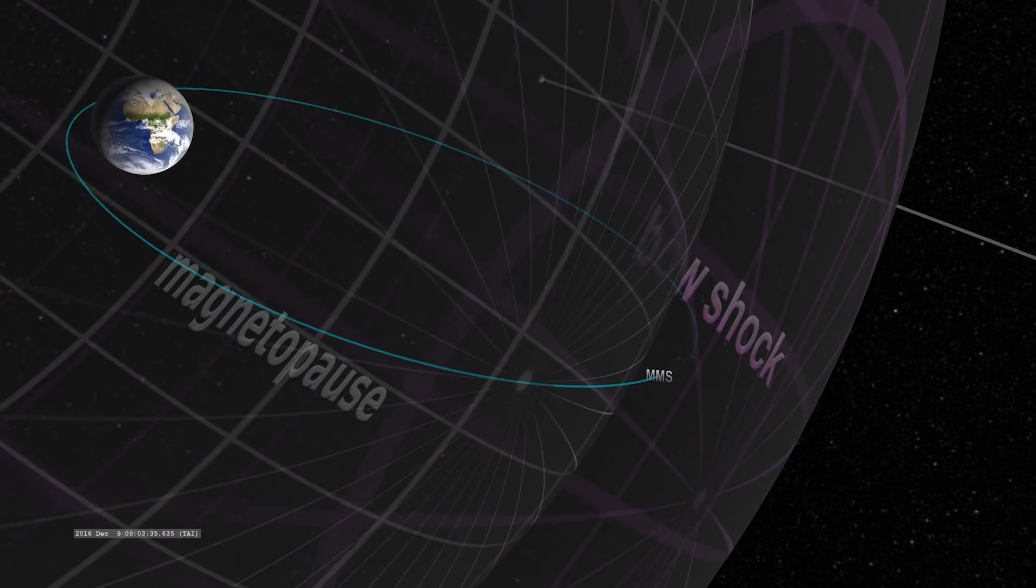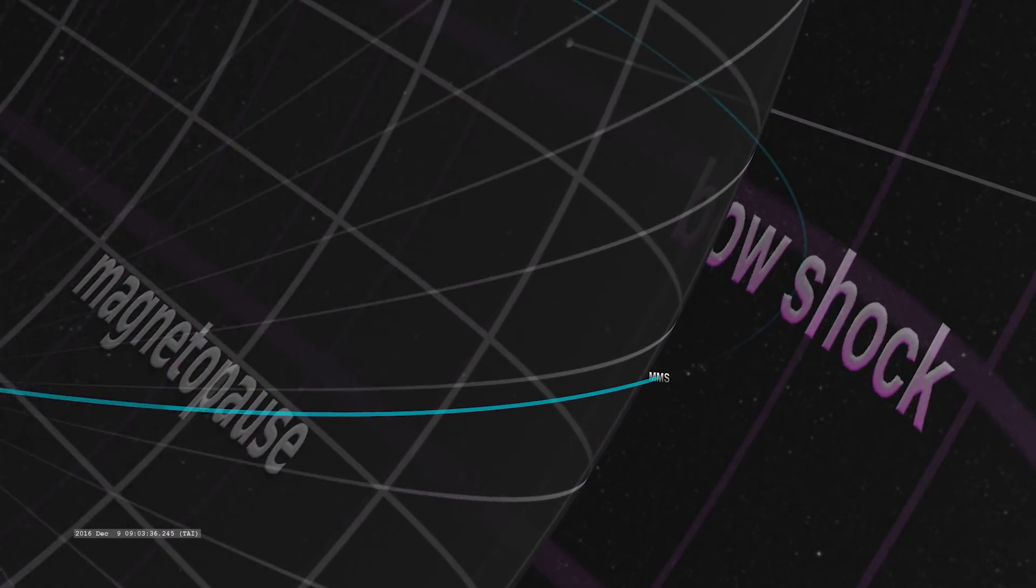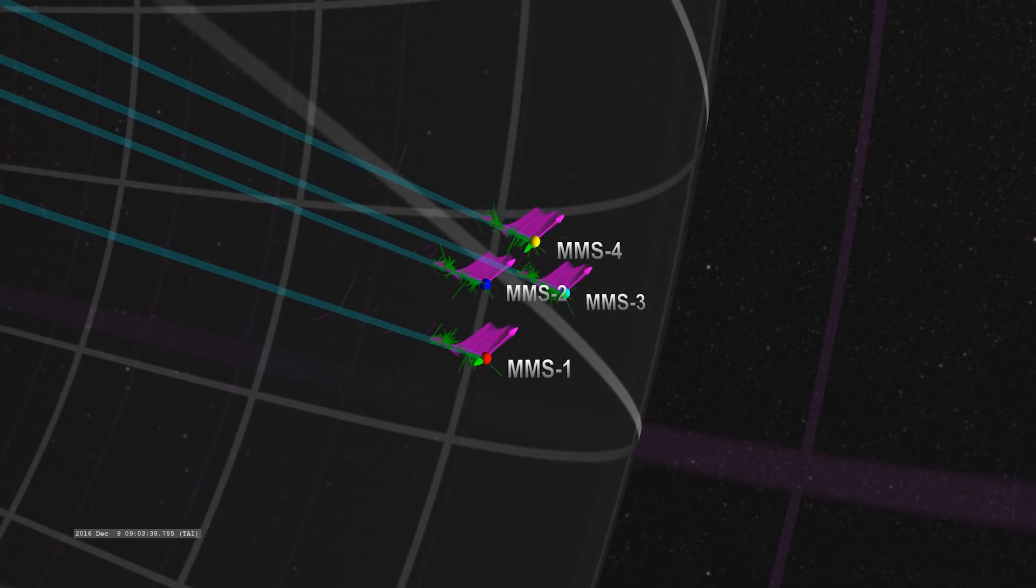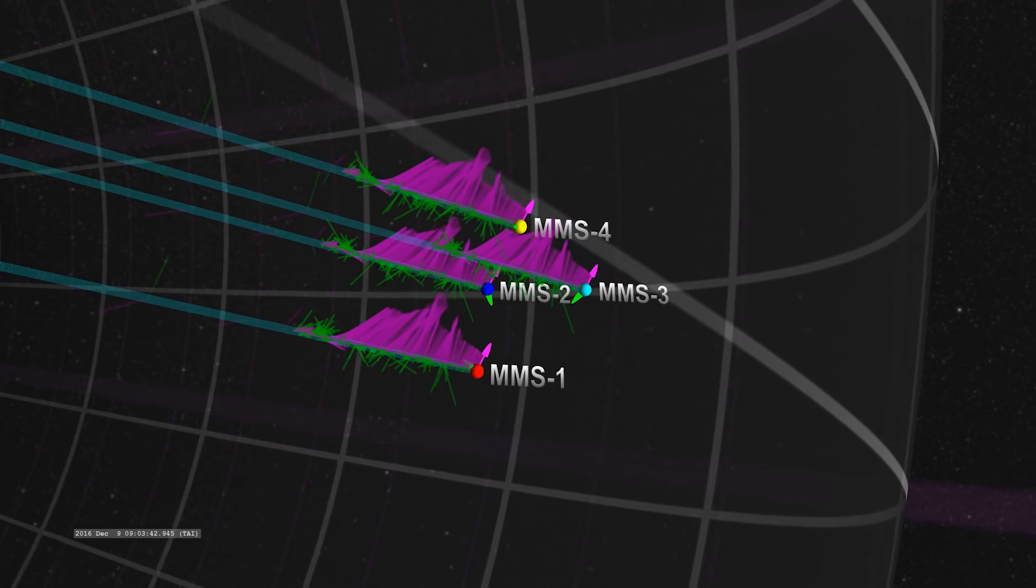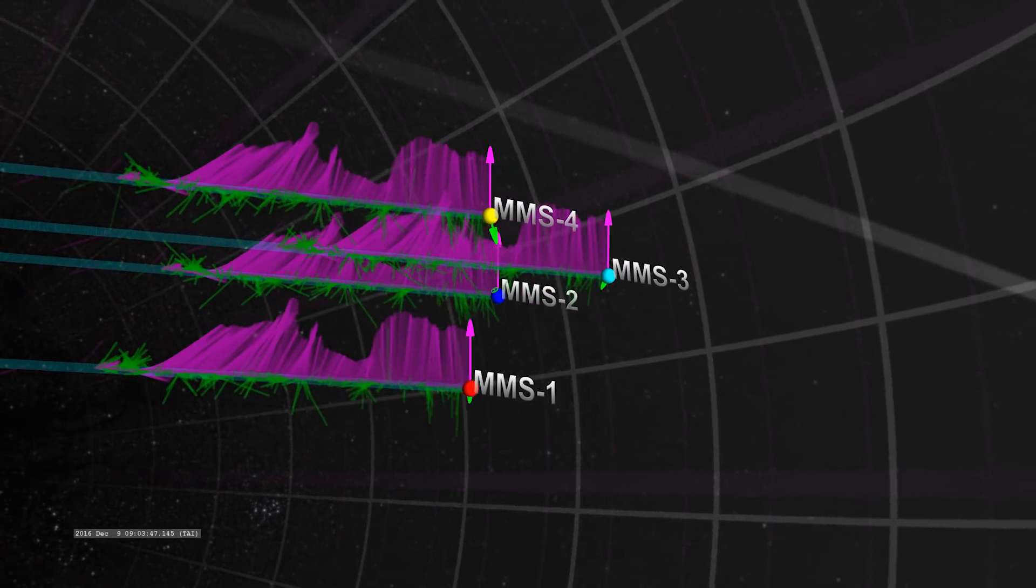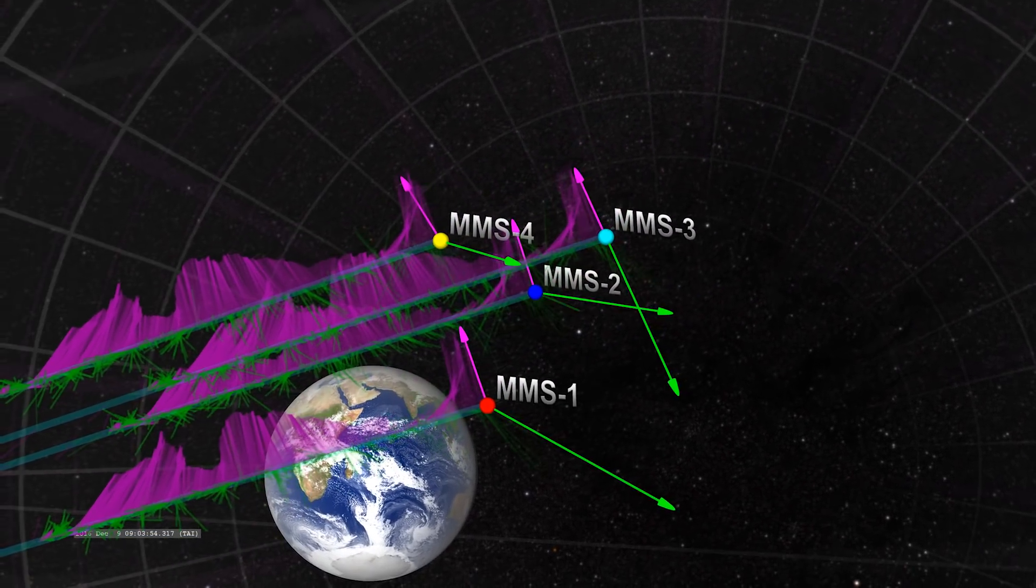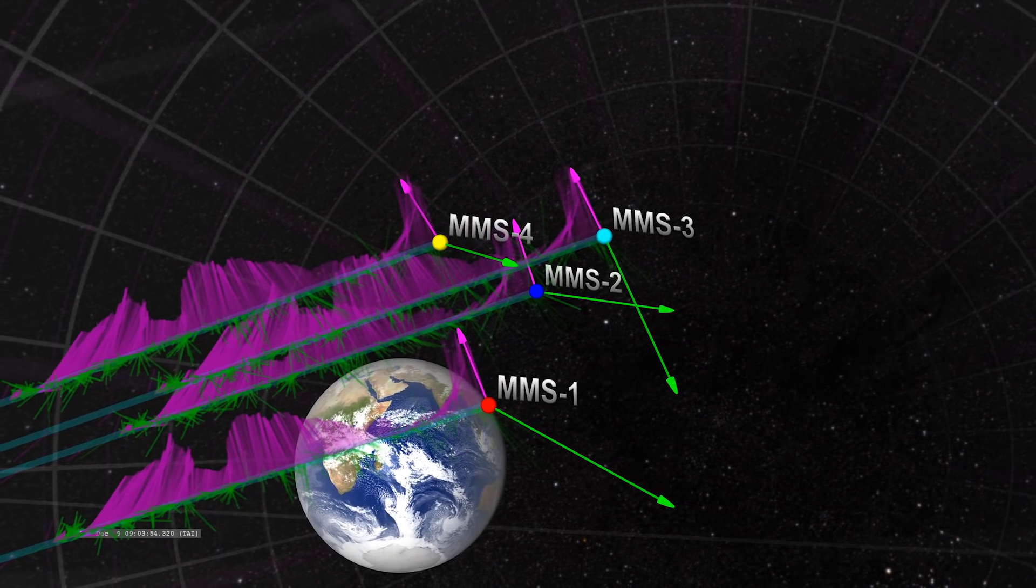MMS captured 3D observations by flying four identical spacecraft in a tight pyramid formation through the magnetosphere. These arrows show the hundreds of observations MMS took to measure the changes in particles and the magnetic field. This is the moment MMS sees bursts of energy from magnetic reconnection.